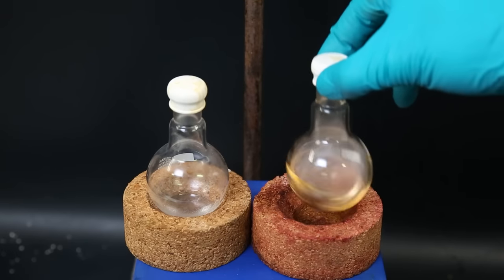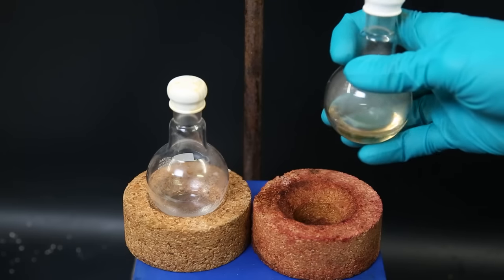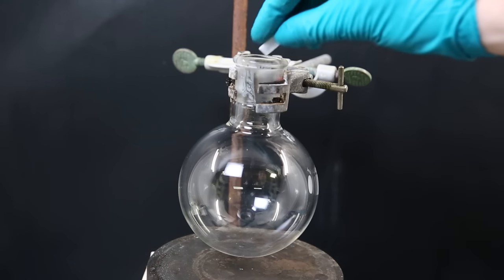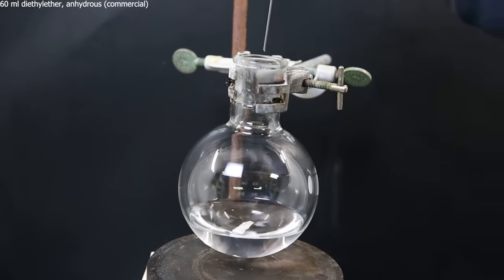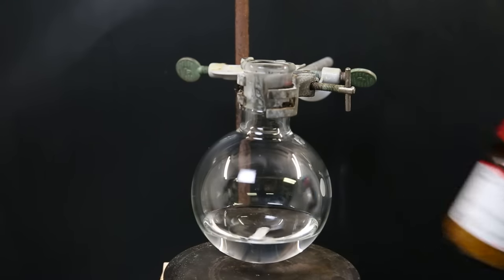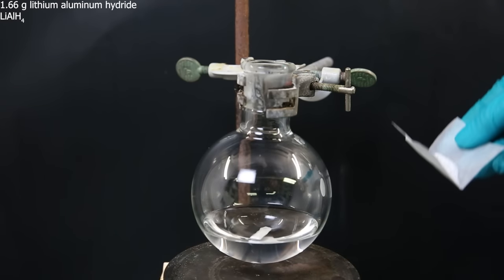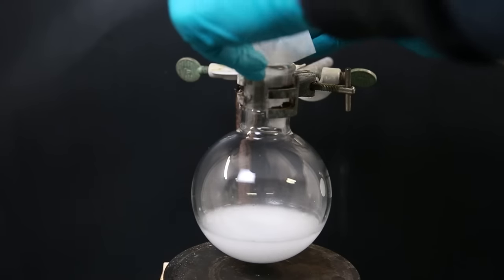Now that I have the tributyl tin chloride, I can move on with the next step, where I will be making tributyl tin hydride. So I set up a flask and drop in a stir bar. I then add 60 ml of anhydrous diethyl ether. Now I will add some lithium aluminum hydride, but it comes in little tablets. So I crushed it into a powder and add 1.66 grams of it to the flask.